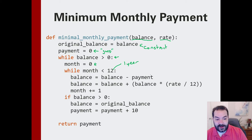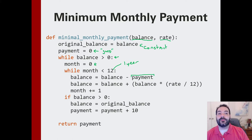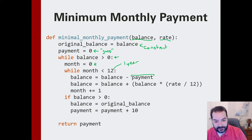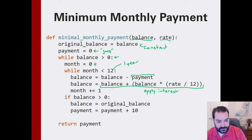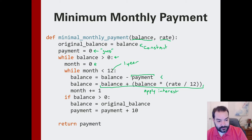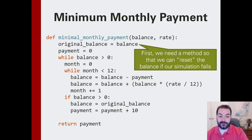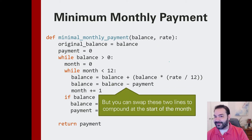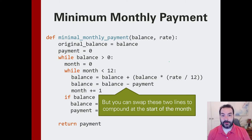First, I make my payment. So whatever my balance was, I'm going to pay $50 to that, so my balance is updated by $50. Then apply interest. The order here depends on effectively when the interest on the loan is compounded — is it compounded at the beginning of the month or the end of the month?